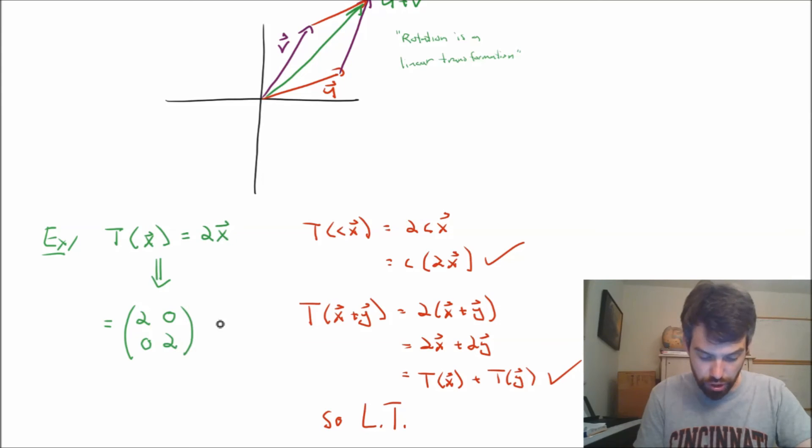2, 0, 0, 2 multiplied by the vector x1, x2. At least in the case where it's multiplication by 2 in two dimensions is that matrix.